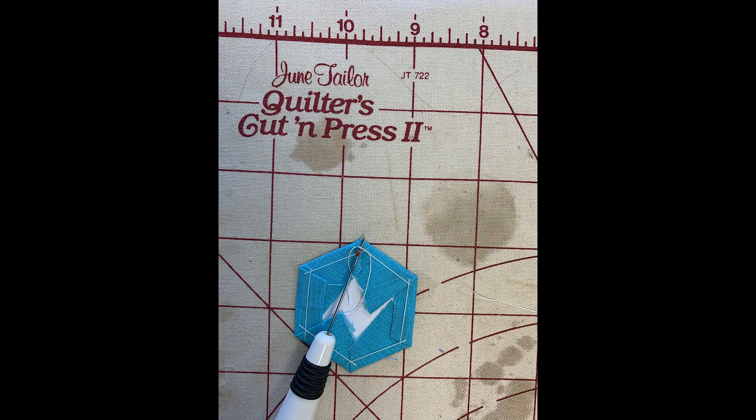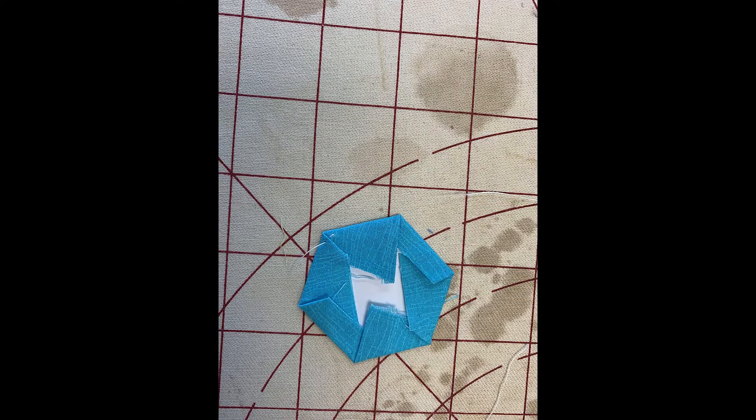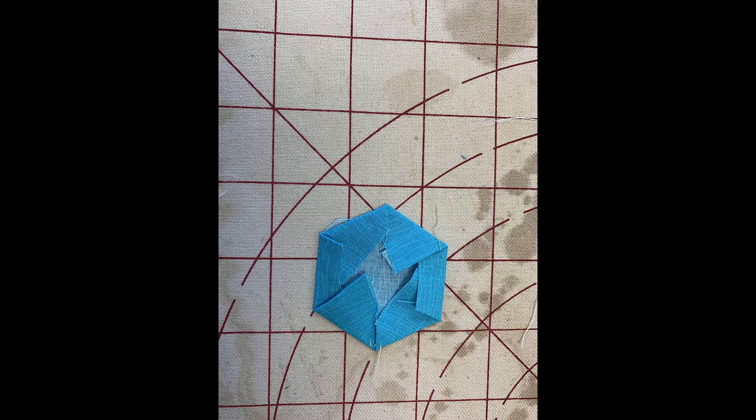Go ahead and snip at that corner where we started, and then use a little bit of a tug and pull out the basting thread. Remove the template, and now we're ready to attach this to the background.